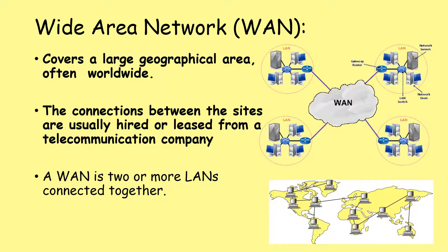On the other hand, a wide area network — a WAN — covers a large geographic area. That might be across a province, a country, or sometimes worldwide. The connections between the sites are usually hired or leased from a telecommunications company. So if my school wants to network a new building right next to it, it supplies all the cables and equipment itself — it pays for and maintains everything. But if we want to link to a school on the other side of the country, we're not going to lay thousands of miles of cables — we're going to rent use of an existing network from a big telecommunications company.